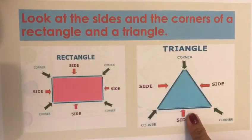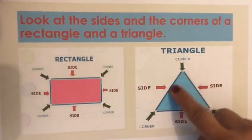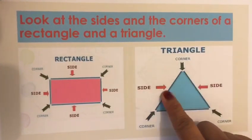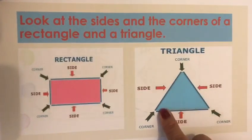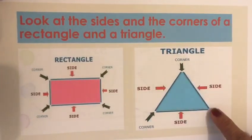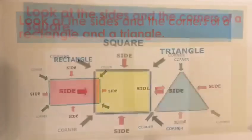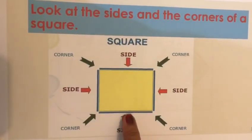Let's see here the triangle. These are called the sides — all these three are the sides. These are called the corners. Here we have one more shape.